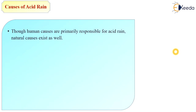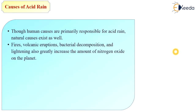In previous slides we have seen only the man-made causes — because of industrialization, different toxic gases are emitted into the atmosphere, increasing the chances of acid rain formation. Along with man-made causes, there are also natural causes like fires, volcanic eruptions, bacterial decomposition, and lightning, which also greatly increase the amount of nitrogen oxide on the planet.